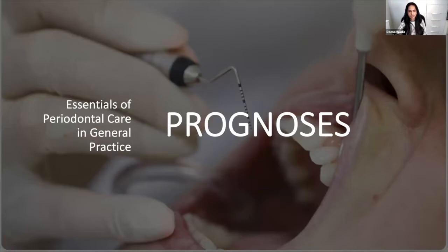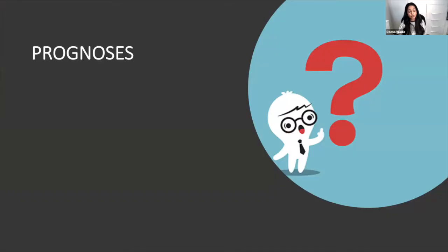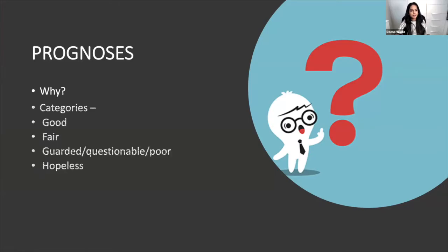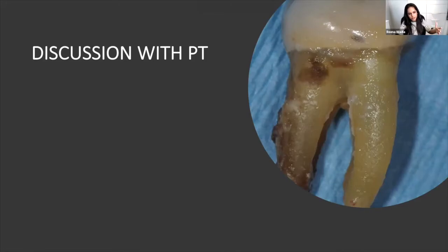After diagnosis, your next automatic step should be prognosis — this is important not just for planning but for communicating with patients. If a tooth has a guarded prognosis, the patient needs to know they may lose it. Dentists get sued for not informing patients a tooth might be lost — the patient loses it, comes back, and says you didn't tell them or refer them in time. Divide prognosis into: good, fair, guarded, or hopeless.